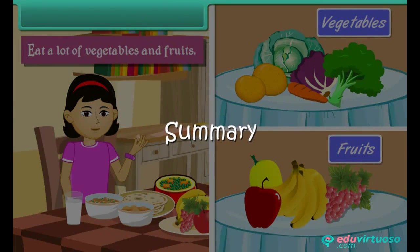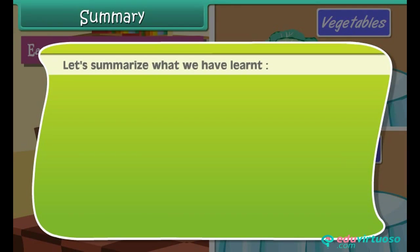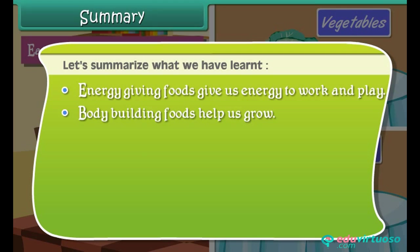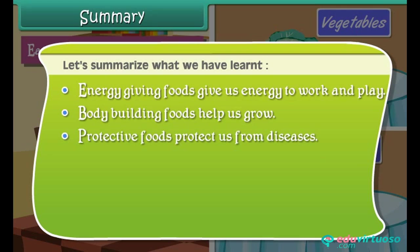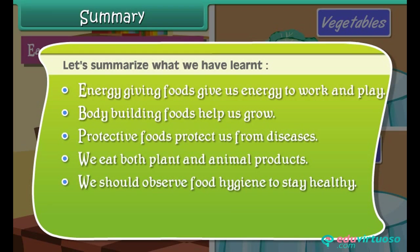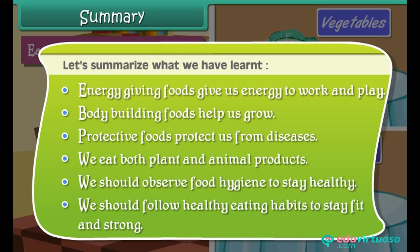Summary. Let us summarise what we have learnt. Energy giving foods give us energy to work and play. Body building foods help us grow. Protective foods protect us from diseases. We eat both plant and animal products. We should observe food hygiene to stay healthy and follow healthy eating habits to stay fit and strong.